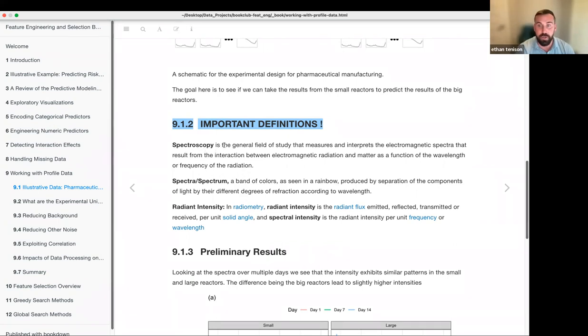And I'm actually going to go down into the definitions. This was really important for me to go over because I had no idea what spectroscopy was. And they use these terms that are very jargony and specific to this specific field that I have not worked in before. But just to overview for comprehension purposes. Spectroscopy is a field of study that measures and interprets electromagnetic spectra.